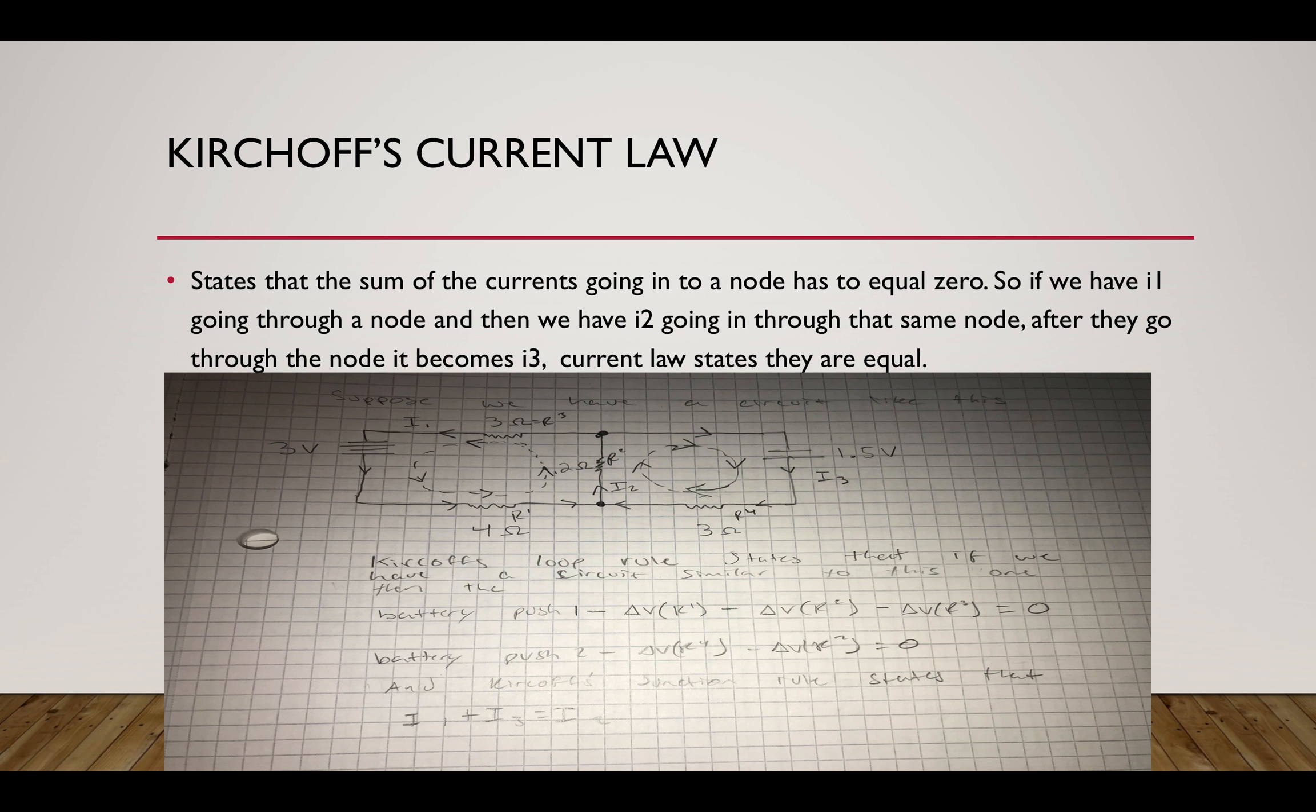So talking about Kirchhoff's current law, basically it has two laws: the loop rule and the junction rule. If we have the loop rule, it just states that if we have a circuit kind of similar to this with two battery sources, we follow these equations which is battery push from battery one minus change in voltage times resistor one minus change in voltage times resistor two minus change in voltage times resistor three equals zero. Same thing with battery two.